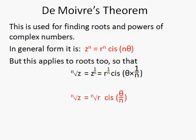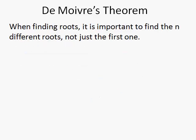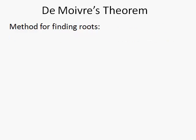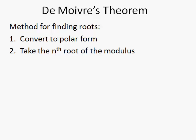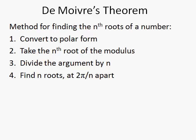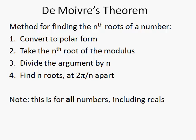The big difference between the two is that when you find roots it's important to find all the solutions, and there will be n of them, not just one. This is our method: we convert the number to polar form, take the nth root of the modulus, divide the argument by n, and find the n roots which are 2π over n apart. This applies to all numbers — positive and negative reals as well as imaginary and complex.